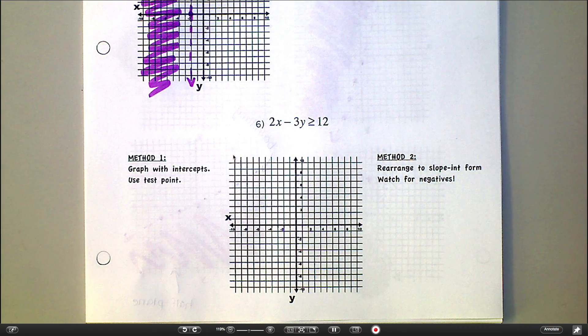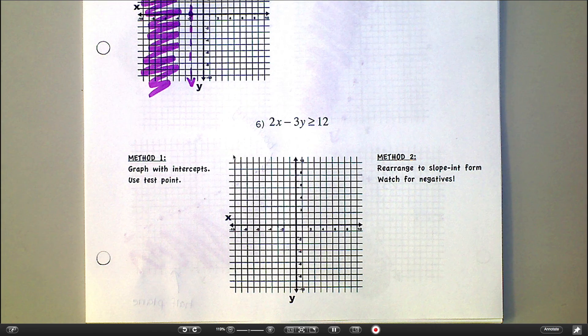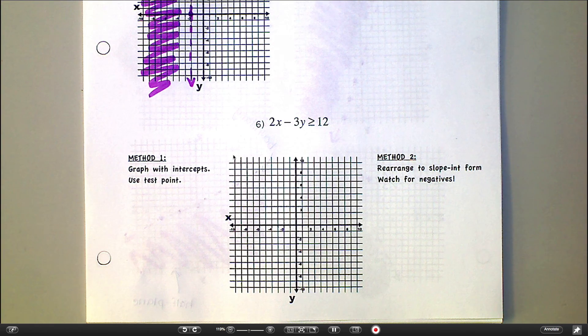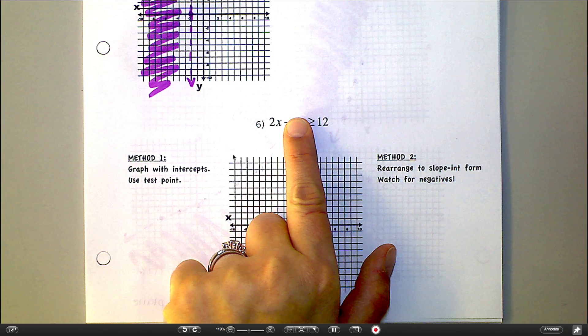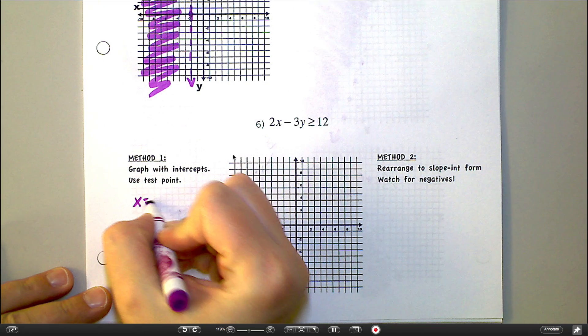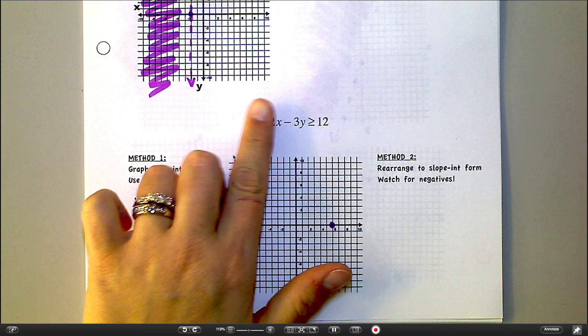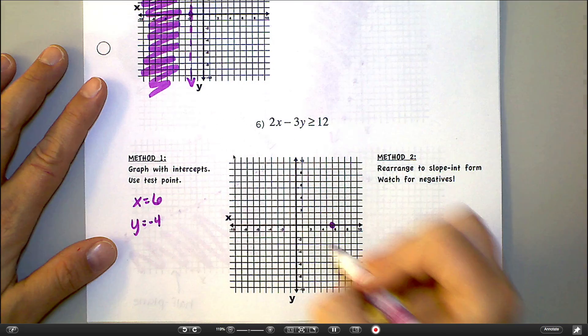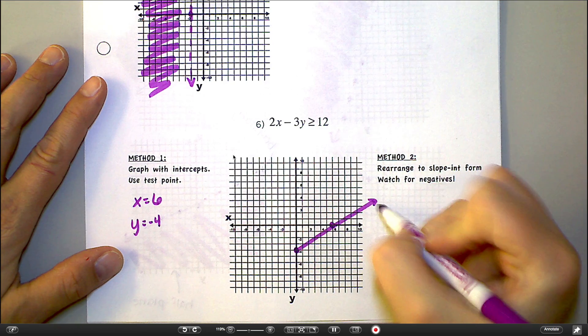All right, number 6, kind of a tricky one. Number 6, you'll notice, is written in a different form. It's written in standard form. And there's actually two different ways you can go about this. I'm going to show you both. I'd like you to write down both, and then you can use whichever way you prefer. So when we did linear equations, if I had an equation that looked like this, I usually prefer to graph it with the intercepts because it's just quick. So if I want the x-intercept, I'm going to cover up the y. So now I have 2x equals 12. Divide both sides by 2, and I get that my x-intercept is equal to 6. So on the x-axis, I'm going to go over to 6, I'm going to put a dot. And then if I want my y-intercept, I'm going to cover up my x. So now I have -3y equals 12. Divide by negative 3, and so my y-intercept is negative 4. So on the y-axis, let's go down to negative 4, put a dot. Now this is going to be a solid line because there is an equal bar.